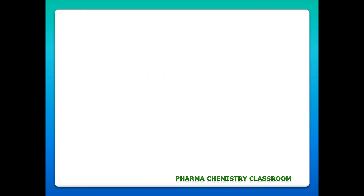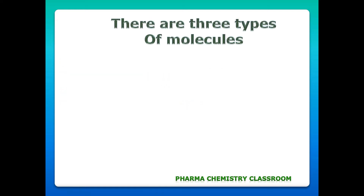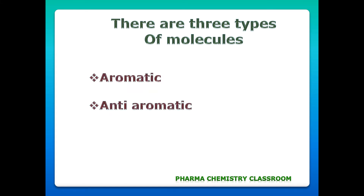Whether a molecule is aromatic or not, based on that there are three types of molecules. First one is aromatic, second is anti-aromatic, third is non-aromatic.